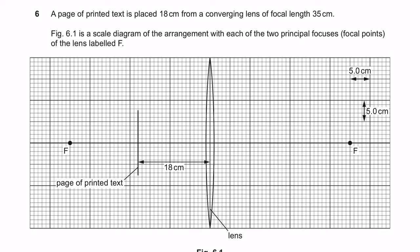Question 6. A page of printed text is placed 18cm from a converging lens — 18cm from the centre of the lens, which has a focal length of 35cm. Figure 6.1 is a scale diagram of the arrangement with each of the two principal focuses of the lens labelled F.